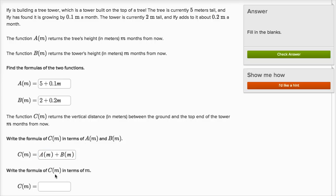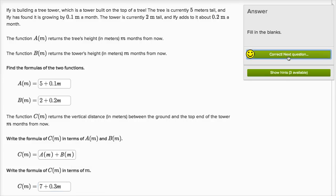And then they say write the formula of C of m in terms of m. Well we just need to add these two functions. If we add five plus 0.1m to two plus 0.2m, let's see we could add five plus two, and we're going to get seven plus, and if I have 0.1m and I add another 0.2m, that's going to be 0.3m. And we are done. We got it right.